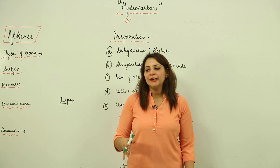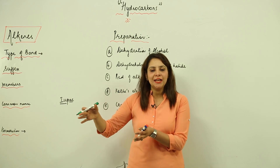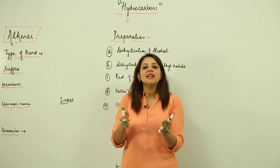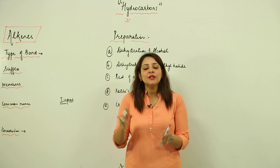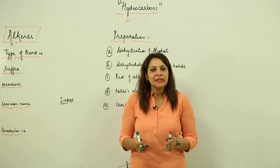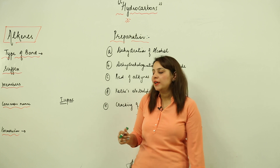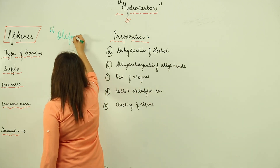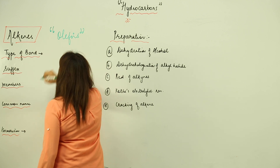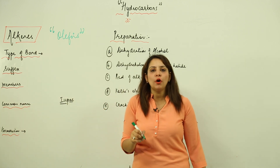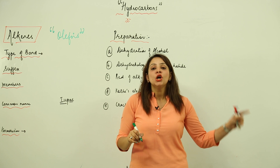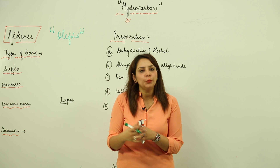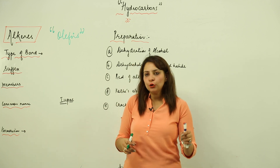Now we are going to start with an unsaturated system — the alkenes and alkynes. First, we are taking into account the alkenes. As alkanes are called paraffins, alkenes are called olefins, which means oil forming. The lower members of alkenes actually form oil products, so that is why they are called olefins.